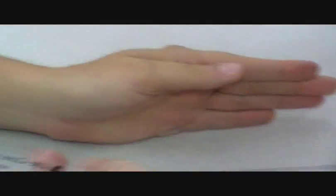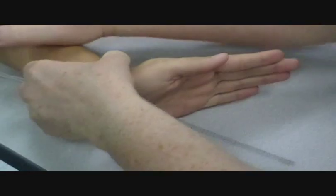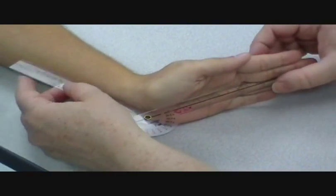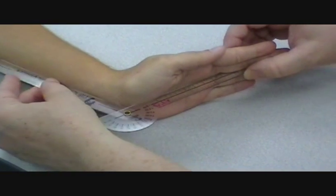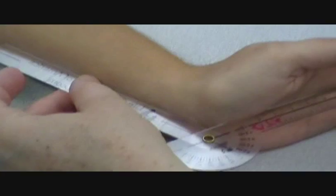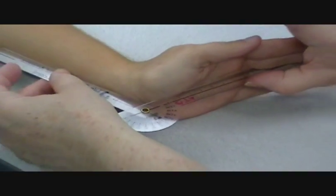For wrist flexion and extension, go ahead and show me wrist extension. Keep your elbow bent so that we're nice and lateral here. And then you have to come between the fingers here. So it looks like we got about 60, 70, 65, about 67.